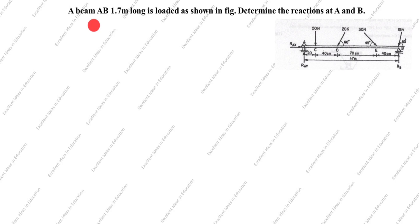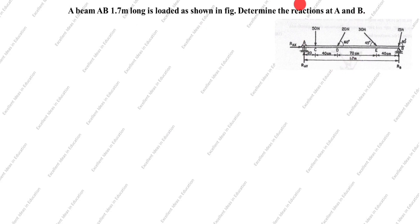Hi friends, welcome to my channel Excellent Ideas in Education. Today we are going to solve this engineering mechanics problem. A beam AB 1.7 meter long is loaded as shown in figure. AB length is given as 1.7 meter. We need to determine reactions at A and B — that is, support reaction A and support reaction B.